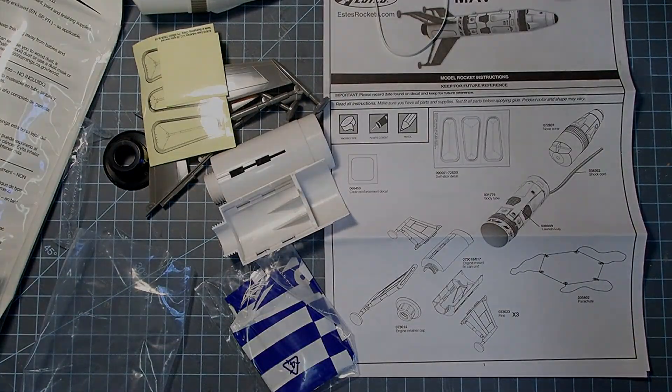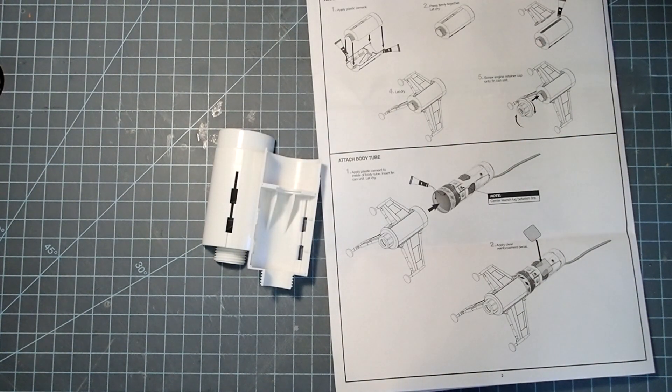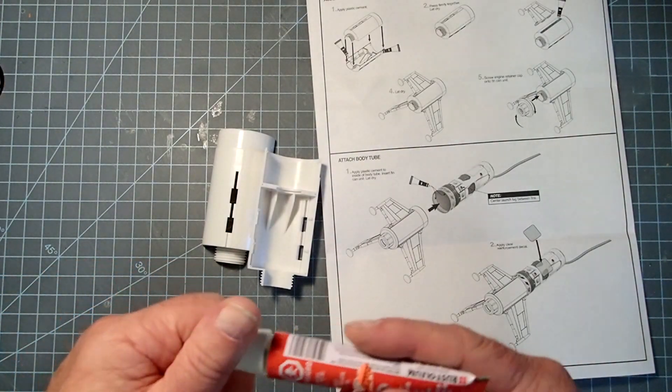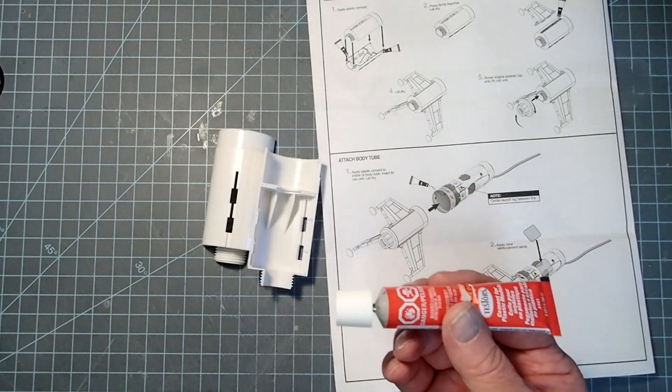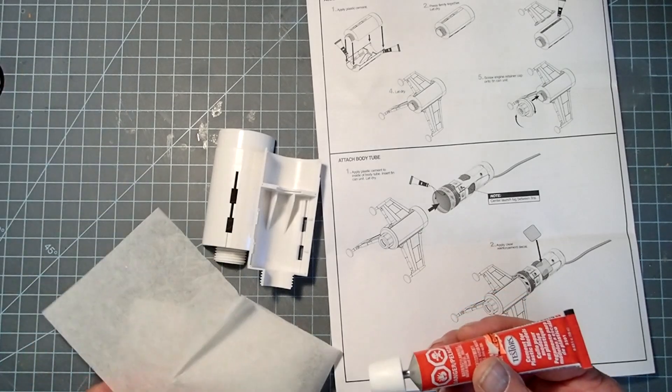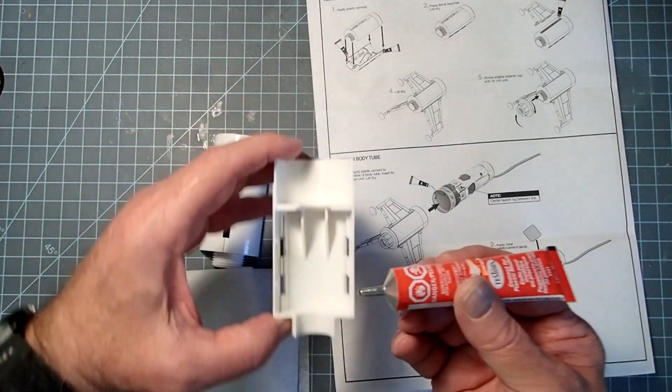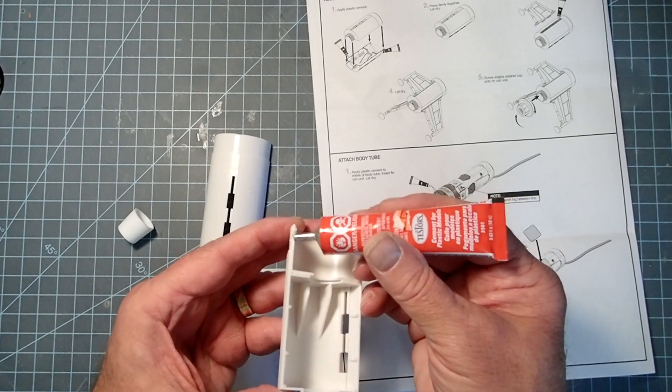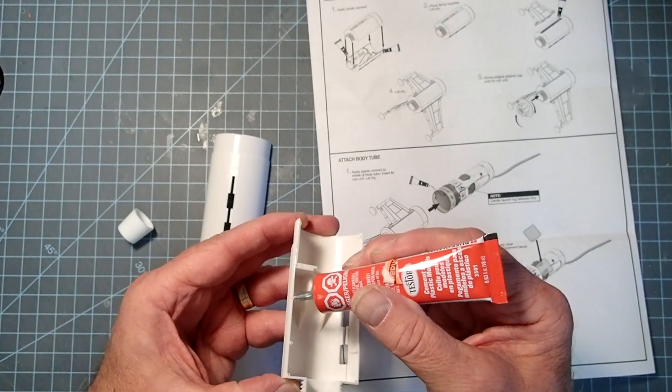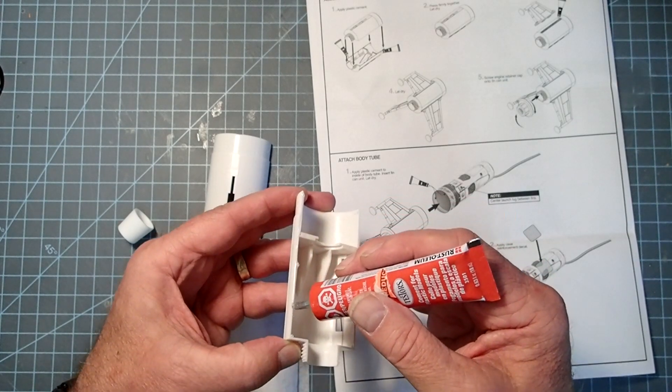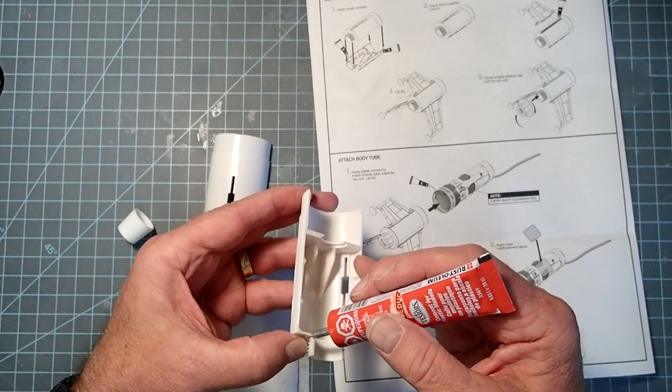And I will clear this away and we will get started. Our first task then is to glue the fin can together. For this you're going to want some tube type model cement. You could use the brush on type as well, but since they're recommending the tube type, we'll go with it. The main thing here is have some tissue or paper towels handy.